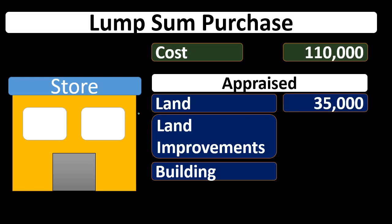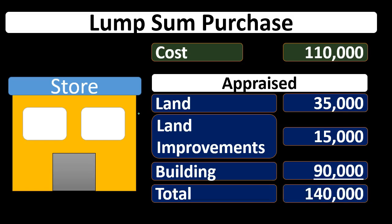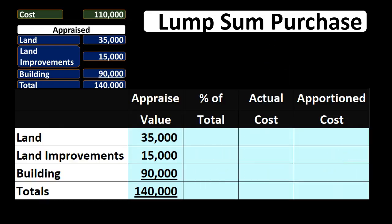We'd want to allocate the $110,000 more to building than land because the building is going to be depreciated and that'll bring down net income, whereas the land will not. So if we have an appraisal of $35,000 for the land, $15,000 for improvements, and $90,000 for the building, that totals up to $140,000 — which is of course different than the cost of $110,000. So how can we use this $140,000 appraisal total to allocate the different purchase amount of $110,000? One way is to use a ratio, which is a really useful concept you'll encounter in many areas of accounting.